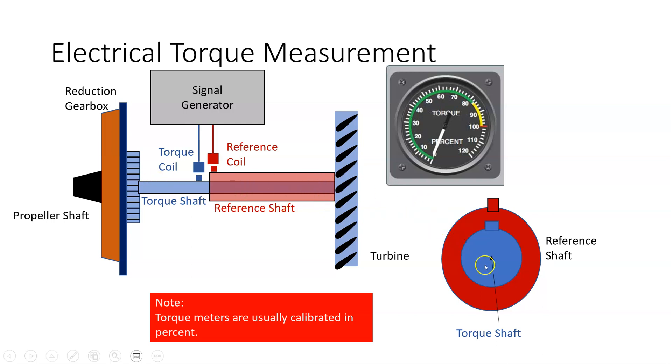So here we are looking in, so this is the torque shaft inside the reference shaft. What's going to happen is when the shafts turn, every time the magnet passes the pickup coil it will generate a signal. And the signal generator here will look at that signal, do some analysis on it, and then output the torque as a percentage.